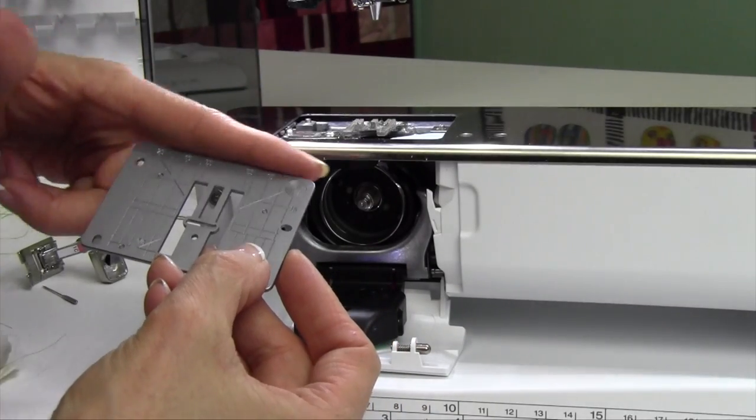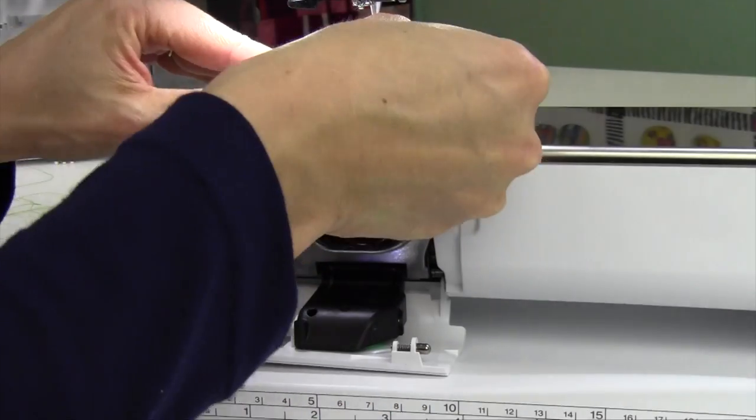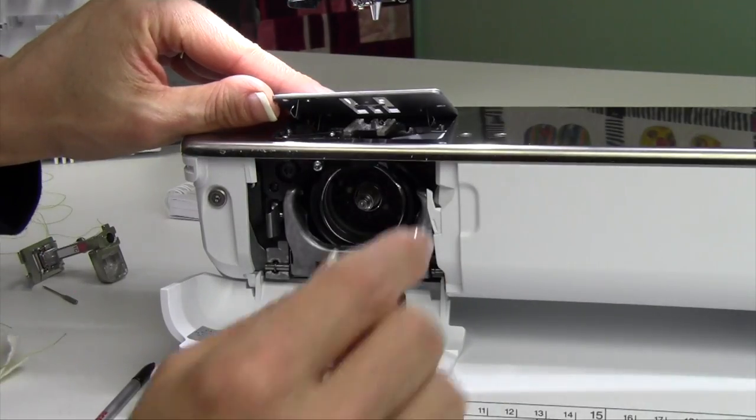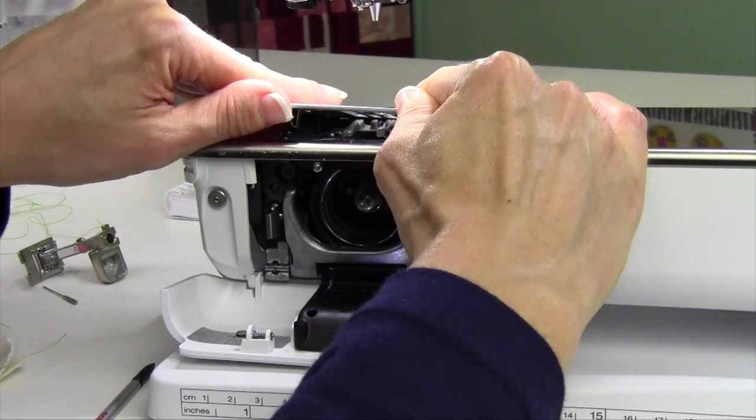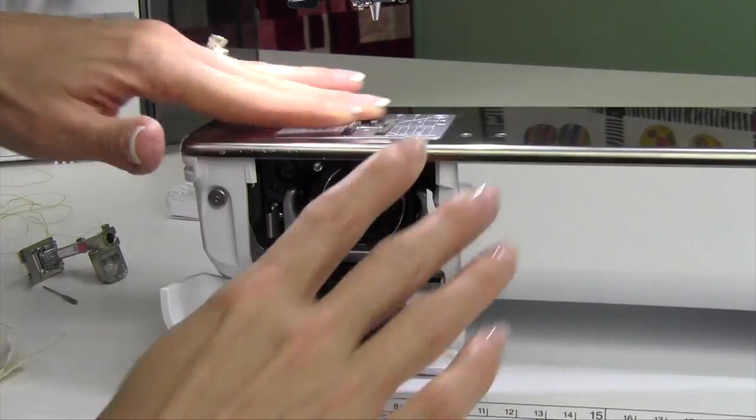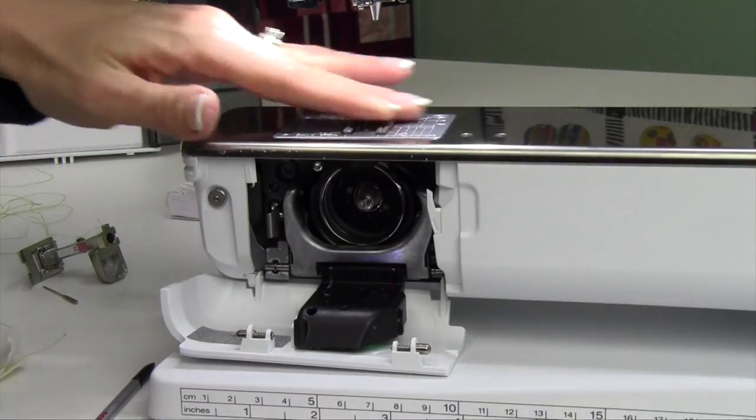Your throat plate, you're going to find if you just line up the back edge back here. It's kind of aiming up at you. Then, with your fingers, just go ahead and push down firmly, and that will snap back into place, and it should be nice and flush.